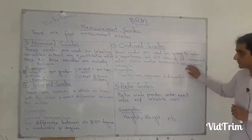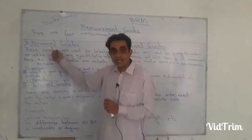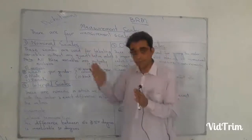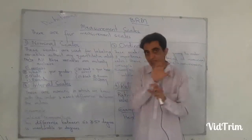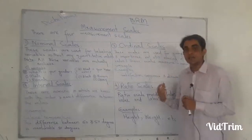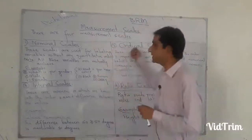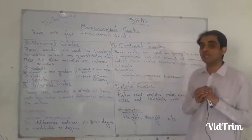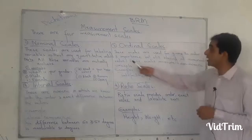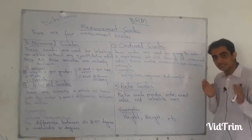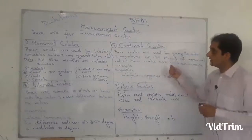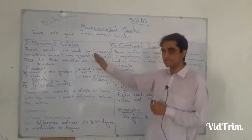Moving to number two: ordinal scale. The word 'ordinal' seems like 'order' — and indeed, here we have names but at the same time we can give order to them: less, more, most; lower level, middle level, higher level. These scales are used for giving order and importance. When there is order — satisfied, more satisfied, very satisfied — importance is implied. But ordinal scales still have no numerical value.